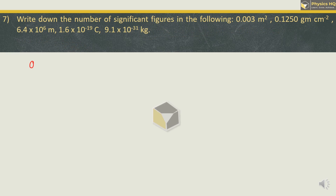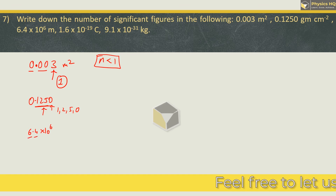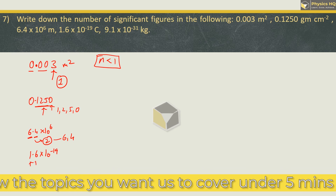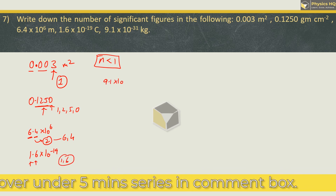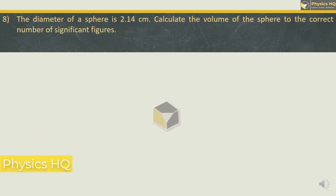Write down the number of significant figures. In 0.003 m², there is only one significant figure — zeros before a decimal and before non-zero digits are not significant; this rule applies for numbers less than one. In 0.1250, there are four significant figures: 1, 2, 5, and 0 — a trailing zero after the decimal point is significant. In 6.4 × 10⁶ there are two significant figures (6 and 4). In 1.6 × 10⁻¹⁹ there are two (1 and 6). In 9.1 × 10⁻³¹ there are two (9 and 1).